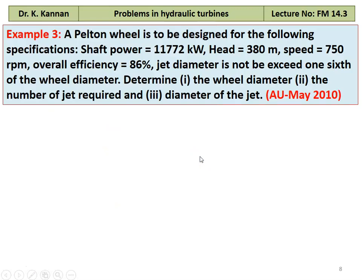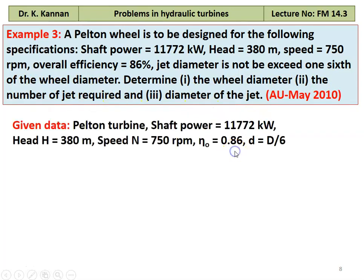Example number 3 from May 2010 question paper: A Pelton wheel is to be designed with shaft power = 11772 kW, head H = 380 m, speed N = 750 RPM, overall efficiency = 86%, and jet diameter not to exceed one-sixth of the wheel diameter (d = D/6). Determine the wheel diameter, number of jets, and jet diameter. Cv is not given, so we assume Cv = 1.